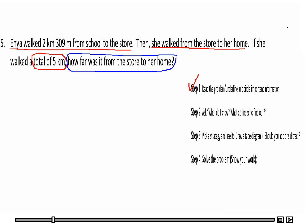So we identified step 1. Now step 2 — what do I know? Everything that I underlined is what I know. We know Inya walked 2 kilometers 309 meters from school to the store, then she walked from the store to her home, and the total distance she walked was 5 kilometers. What I need to find out is how far it was from the store to her home.